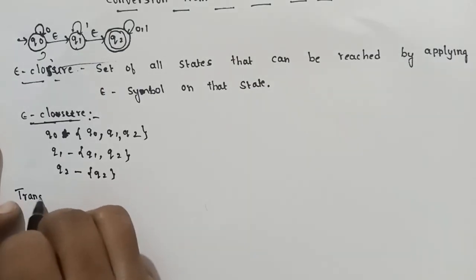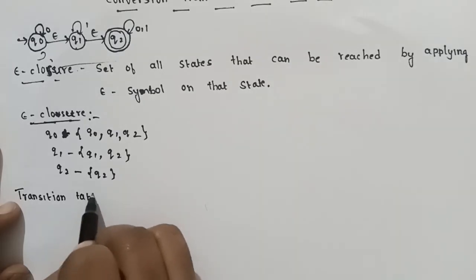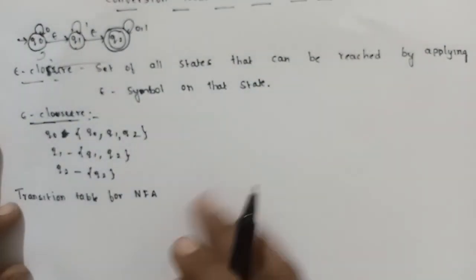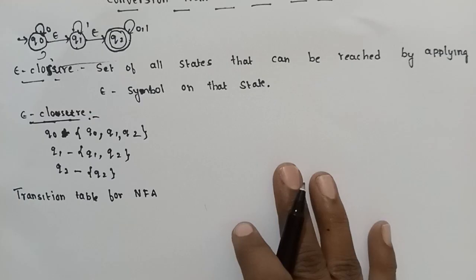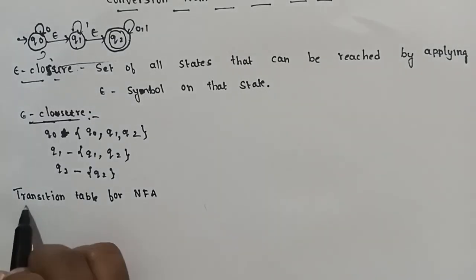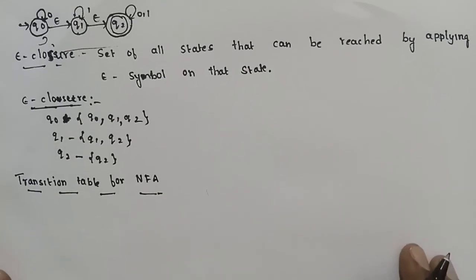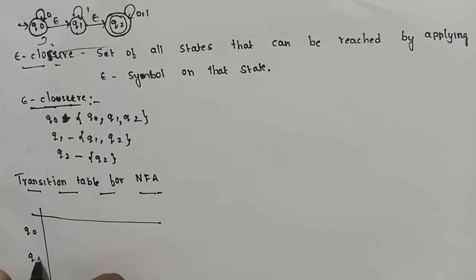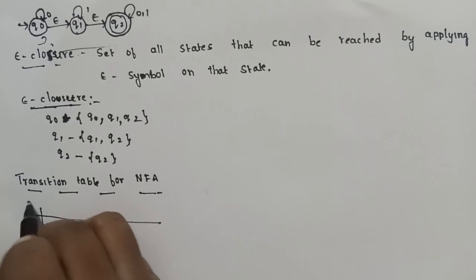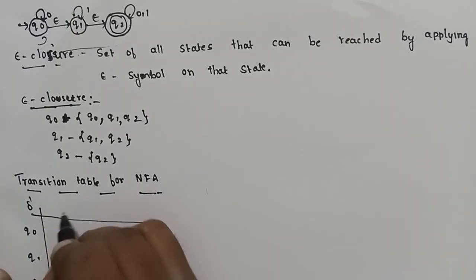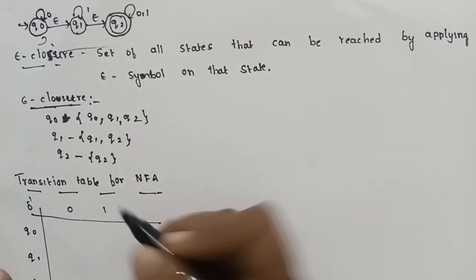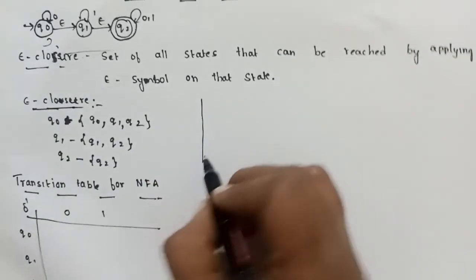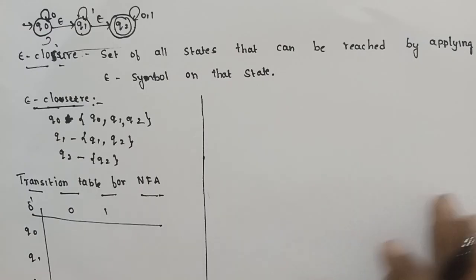Now we find the transition table for the NFA. We will set up the transition table with states Q0, Q1, Q2 and their inputs. To find the transition function delta-prime, we use the epsilon closure formula.